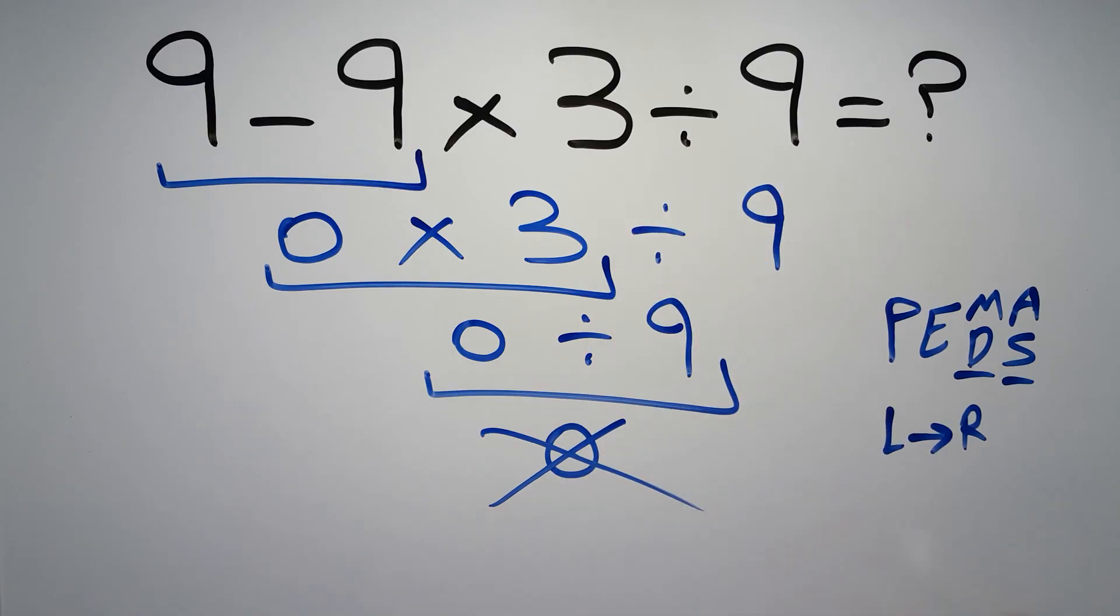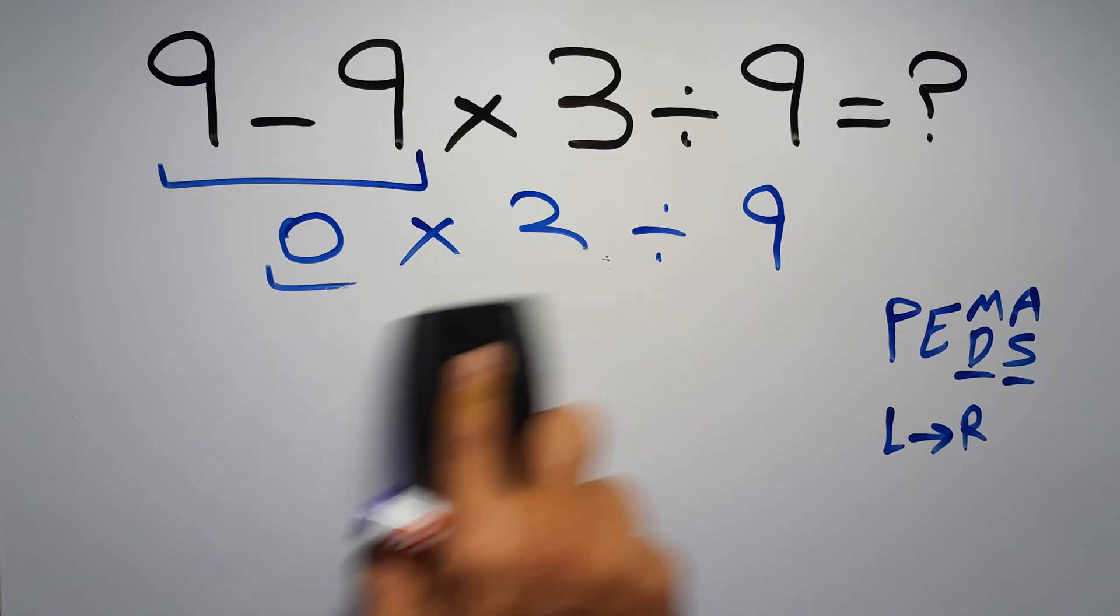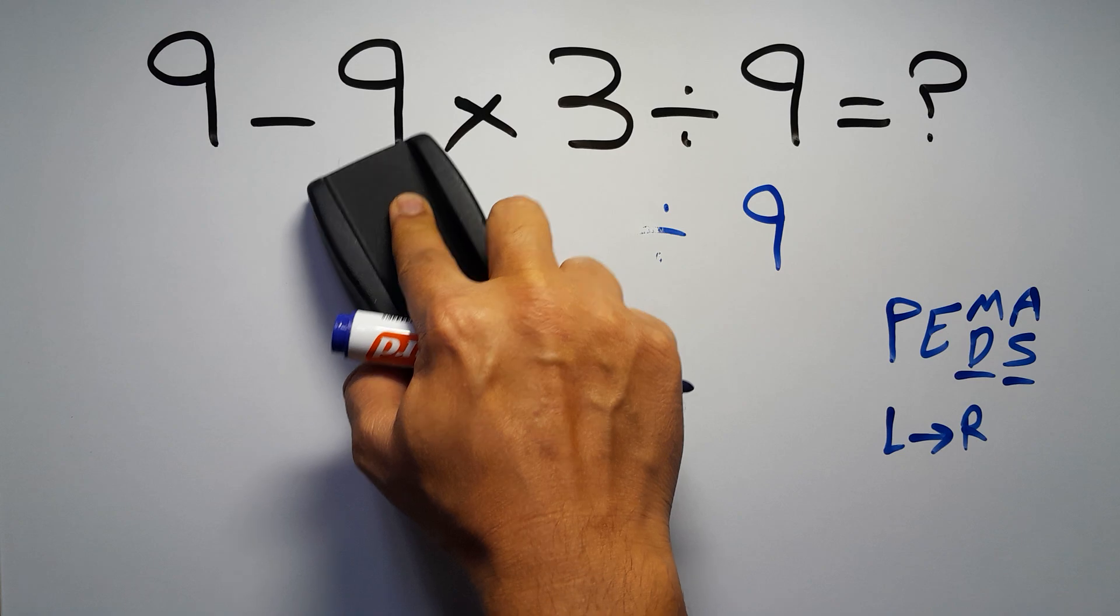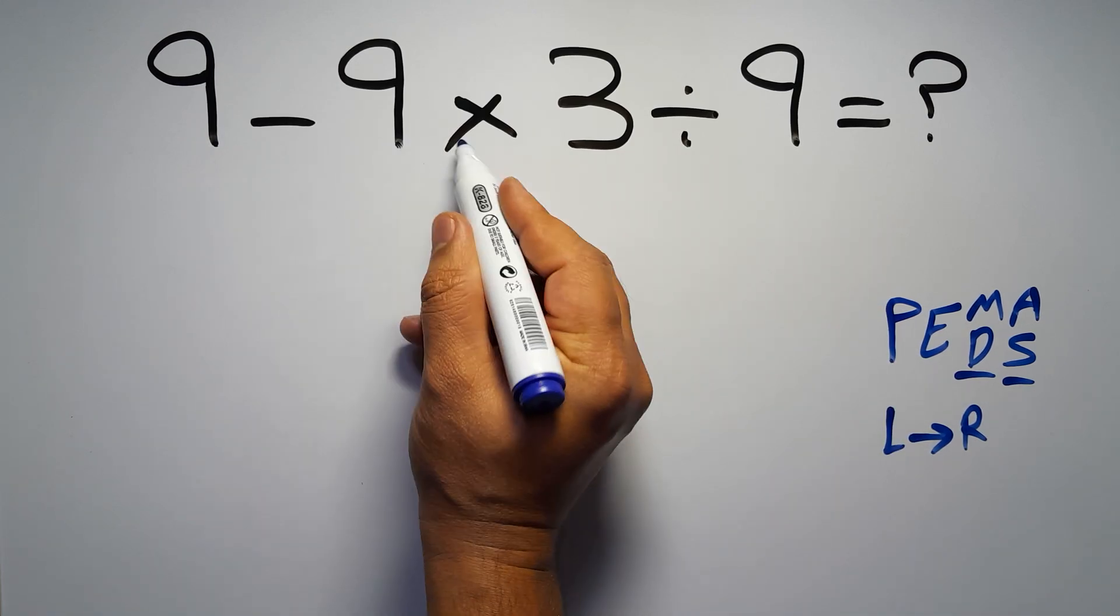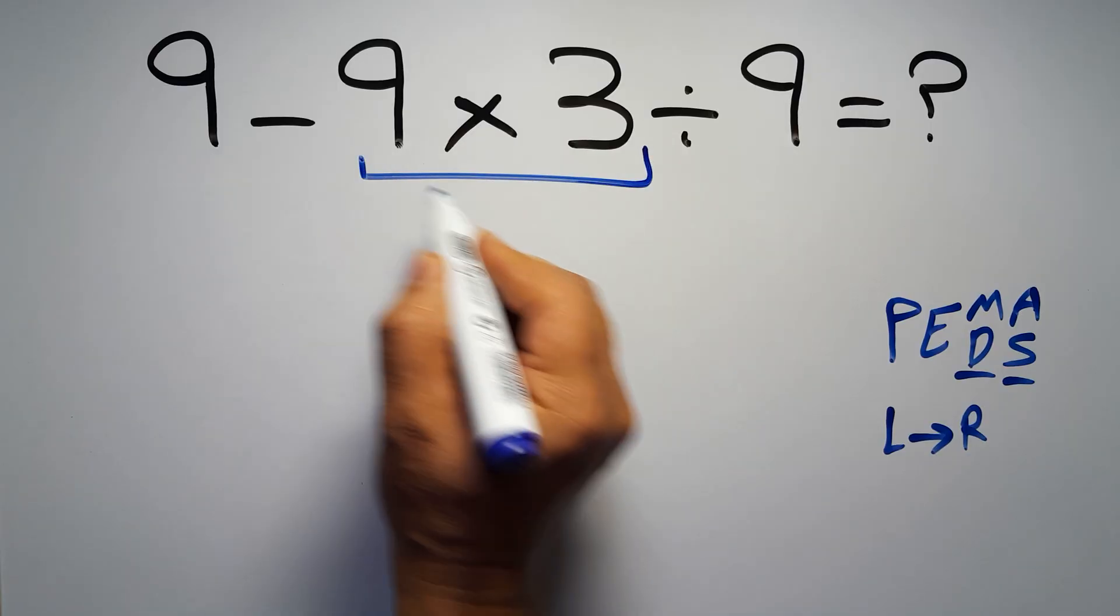So first we have to do this multiplication. 9 times 3 equals 27.